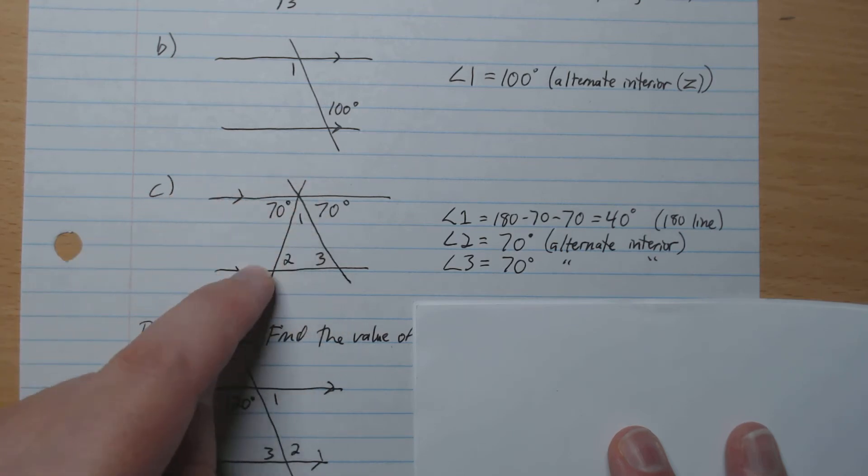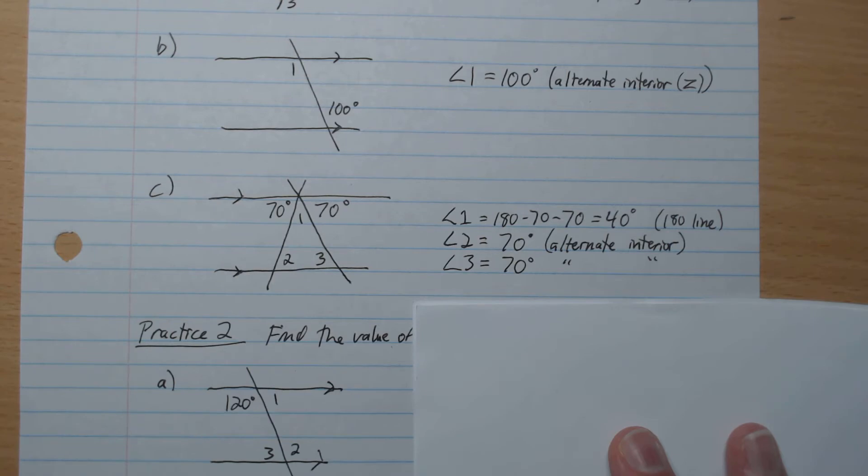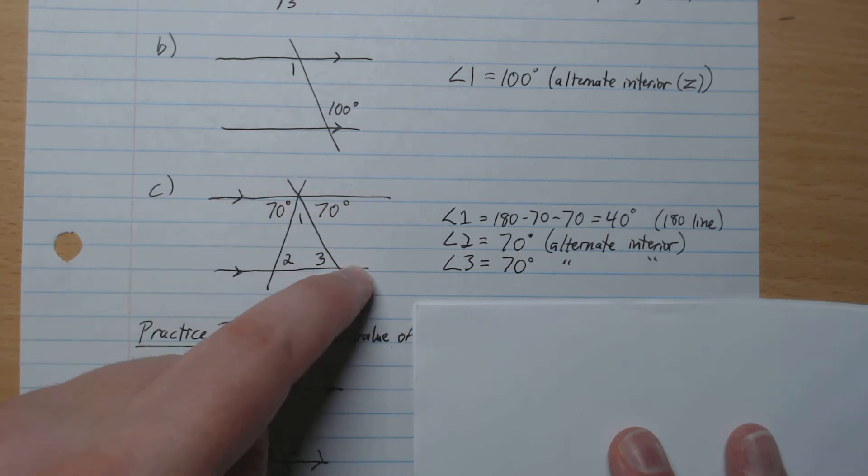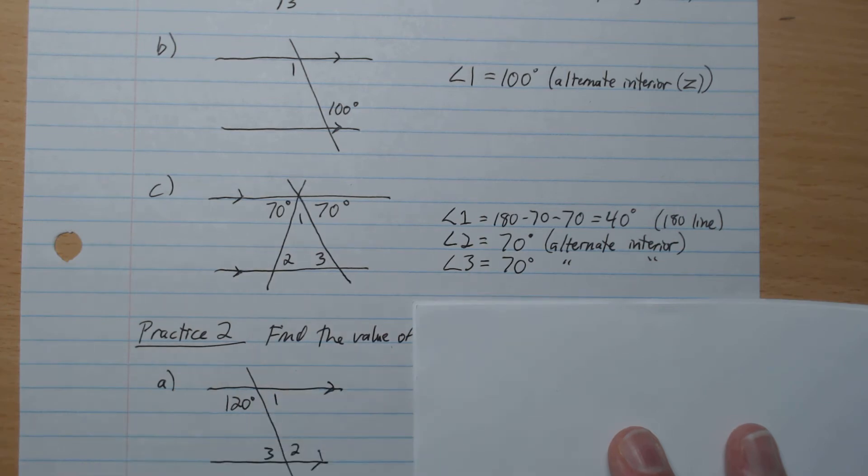Angle 2, we see a little Z here, right? That's our alternate interior. So 2 is 70. We have another Z like this, so alternate interior is 70. So angle 3 is also 70.